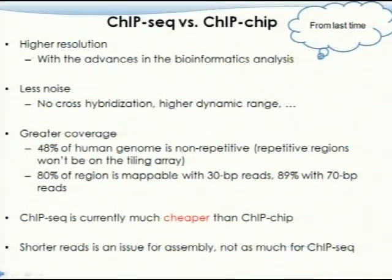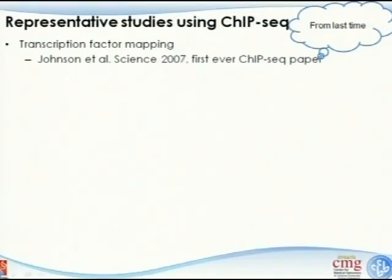Even though repetitive regions won't be put on a tiling array, they are still being sequenced and you can still map them back. ChIP-seq is currently much cheaper than ChIP-chip. Shorter reads are an issue for assembly, but not as much for ChIP-seq. In fact, ChIP-seq was the first real application in the research market for next-generation sequencing technology.